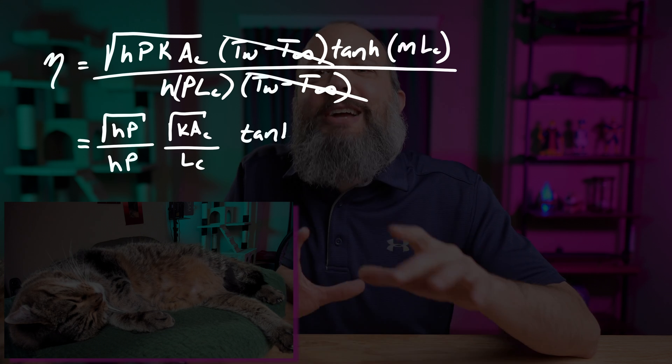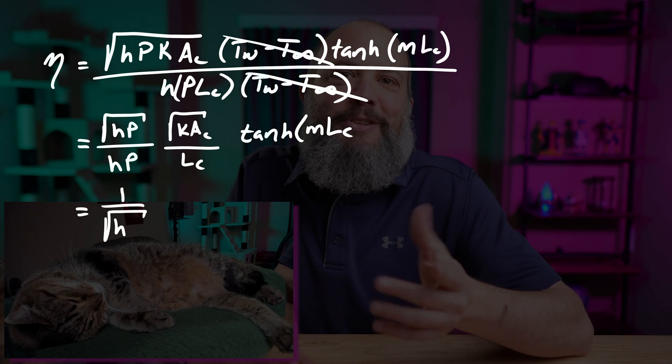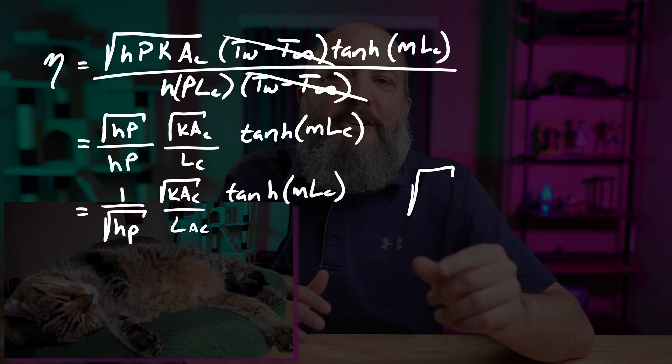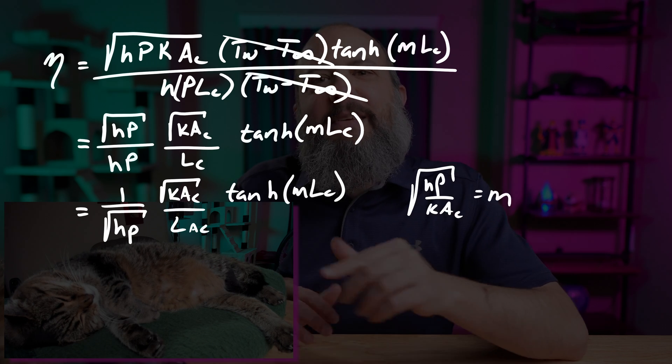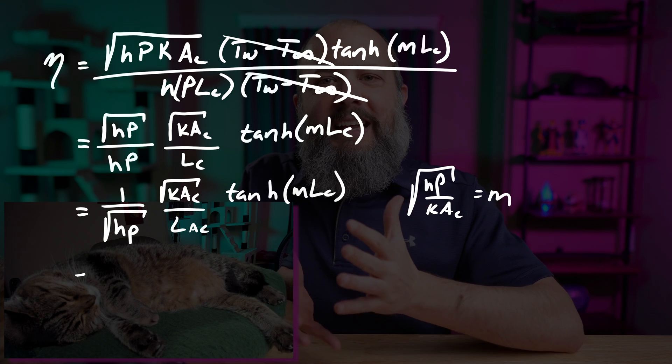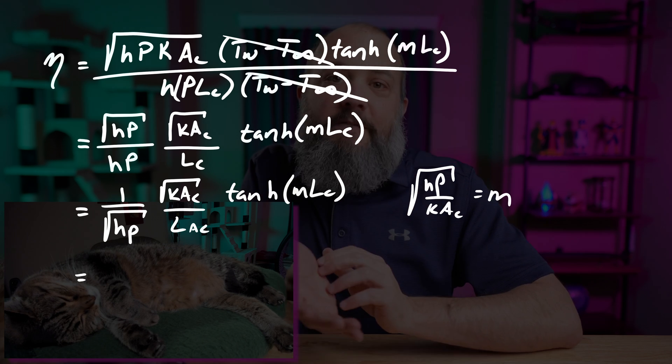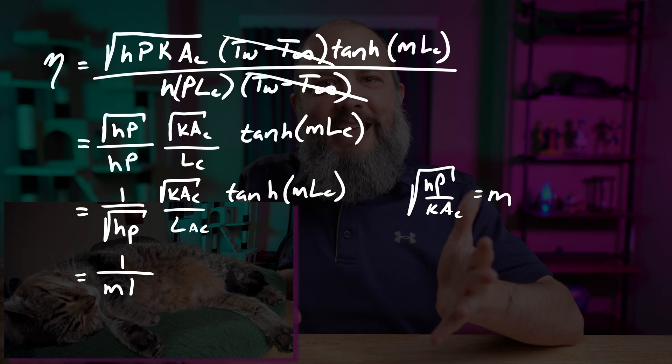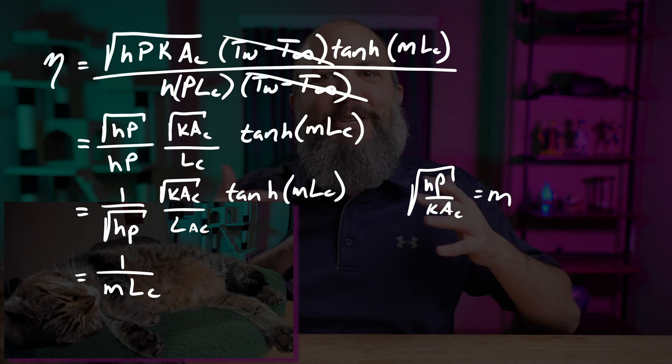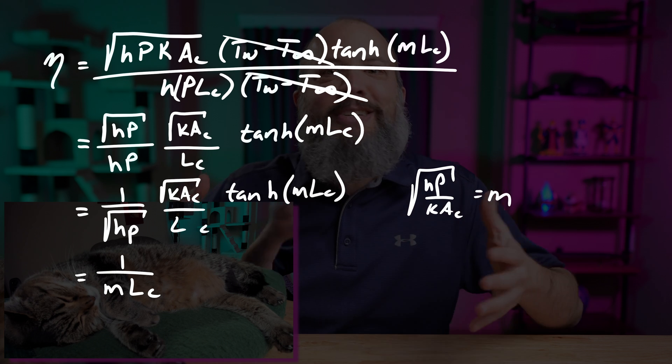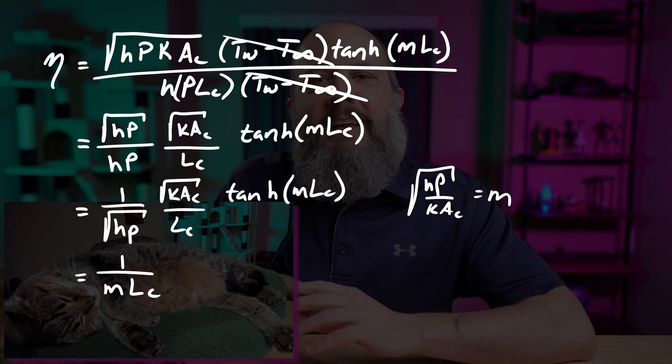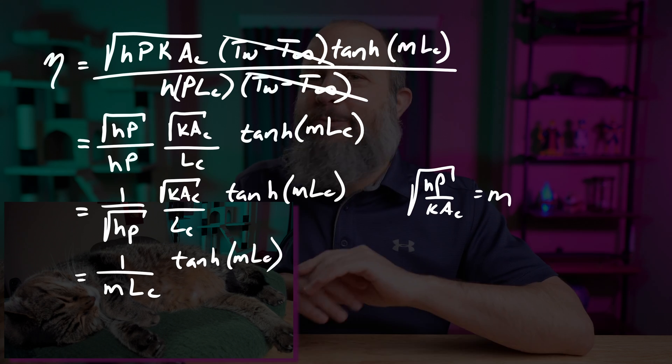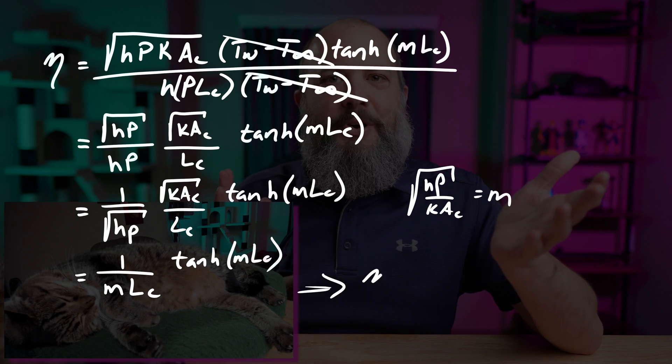But the cool thing that you'll notice is that you do not have to actually calculate this entire big thing. Most of these terms actually cancel out because of the term M. So this fin parameter M is the square root of HP over KA. It's kind of like a biot number in that it's like a ratio between convection and conduction. But as far as I know, it doesn't actually have a name. Most terms in most of your engineering classes are named after a scientist or engineer who discovered them or first used them. I've only ever seen this value M called the fin parameter, which is a super boring, non memorable term at all.